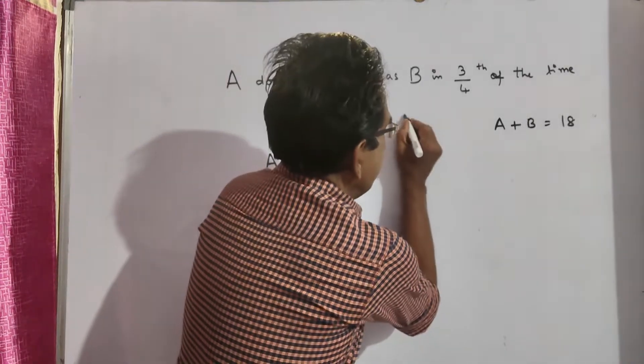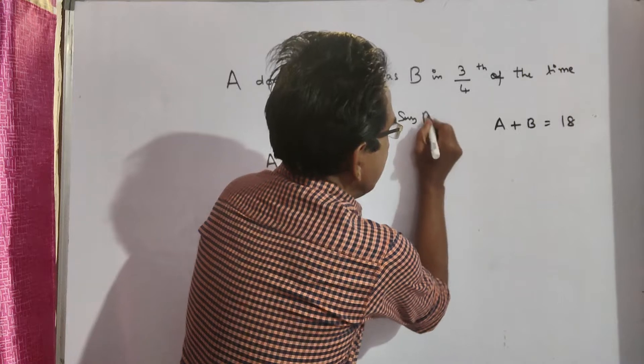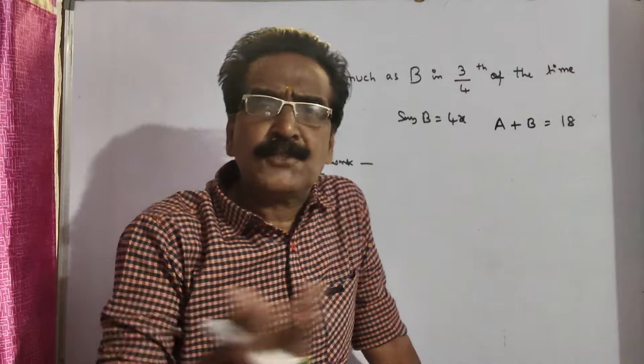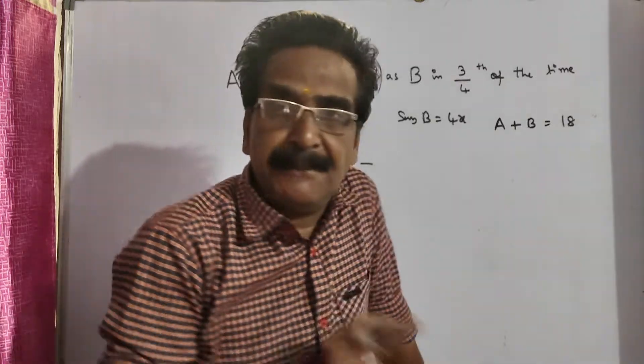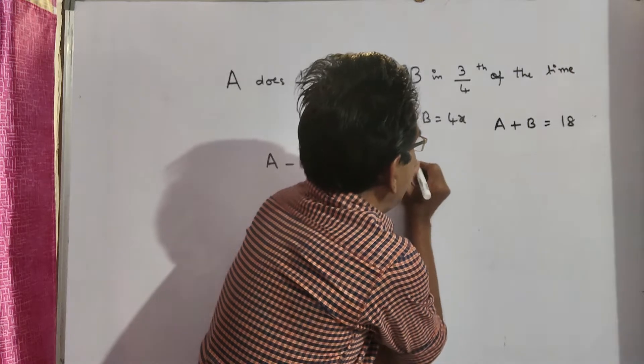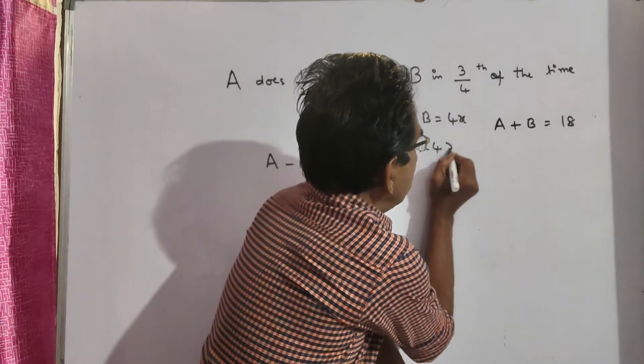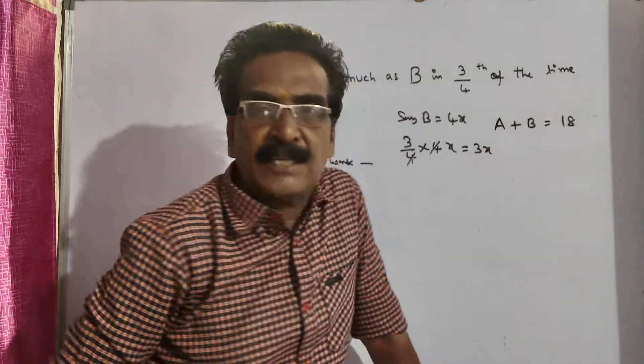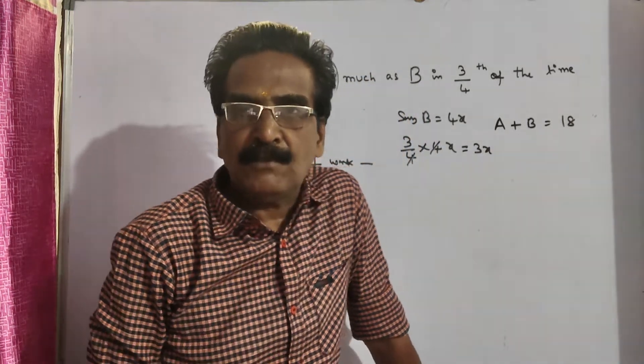Say B takes 4x days. You can assume x also. Three-fourth of the time taken by B is equal to 3x days.